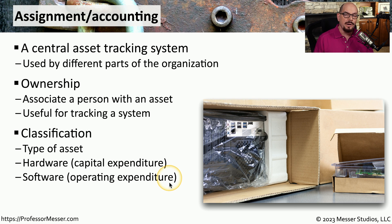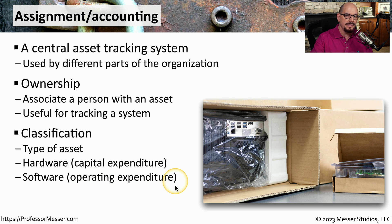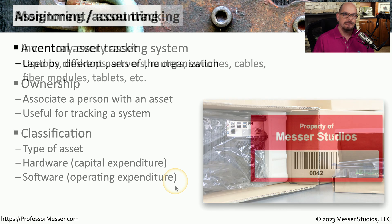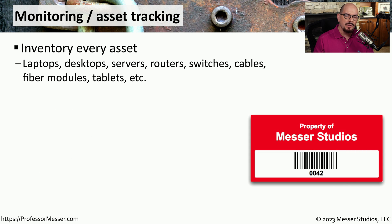For example, hardware is a capital expenditure, and there may be depreciation taken on the hardware, which affects the taxes associated with that asset. Software, however, doesn't generally depreciate, so this is purely an operating expense and it's taxed differently than a capital expense. Our asset tracking system is not only used when we purchase the product, but we also use it for the entire lifecycle of that product to inventory it, understand where the product is, and provide some type of tracking.